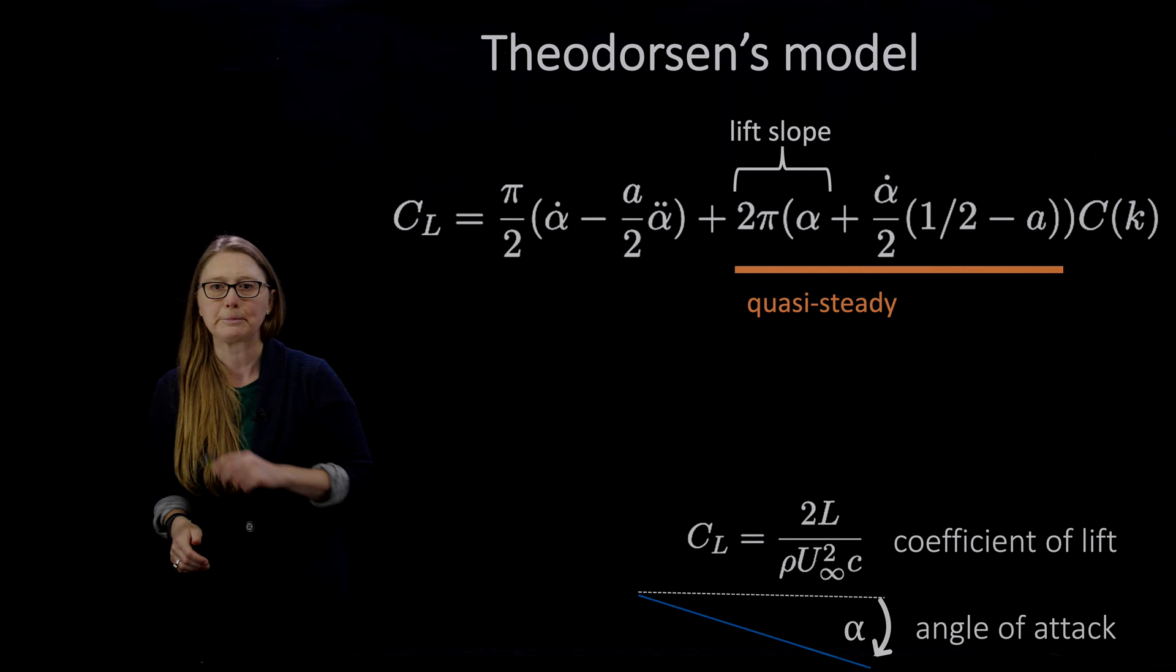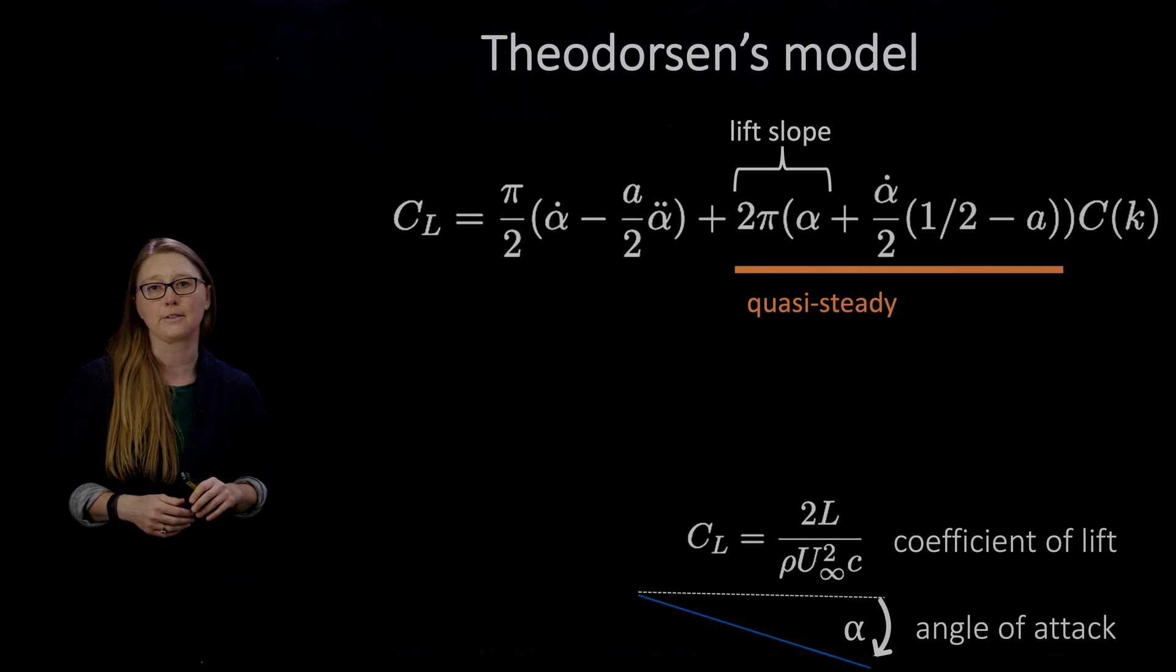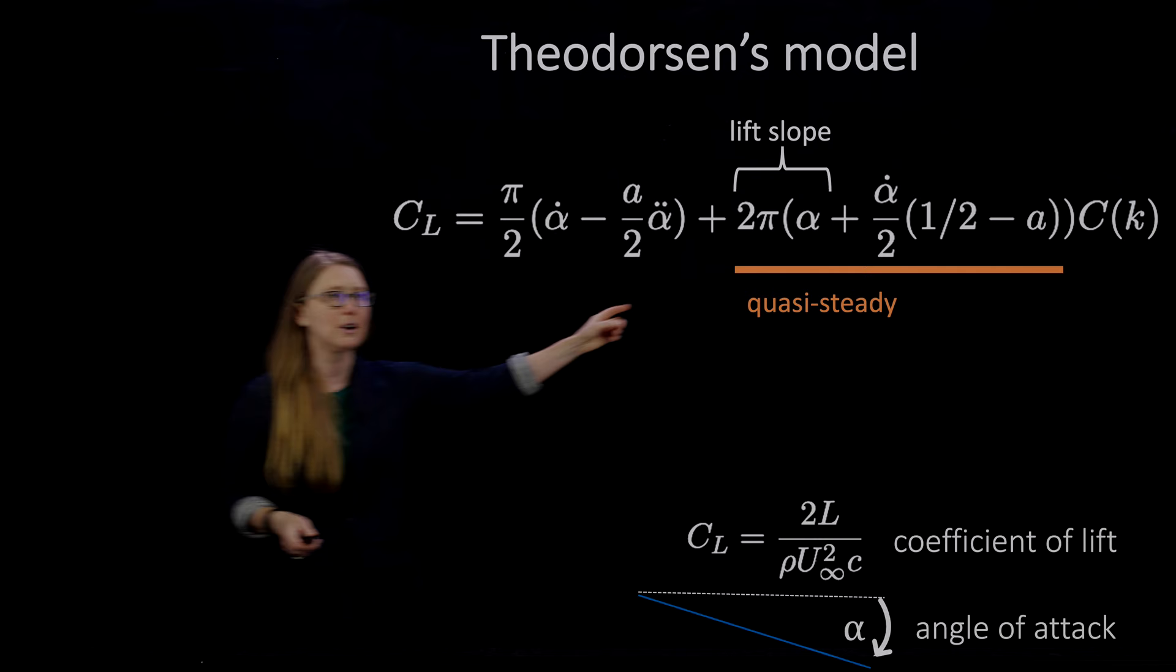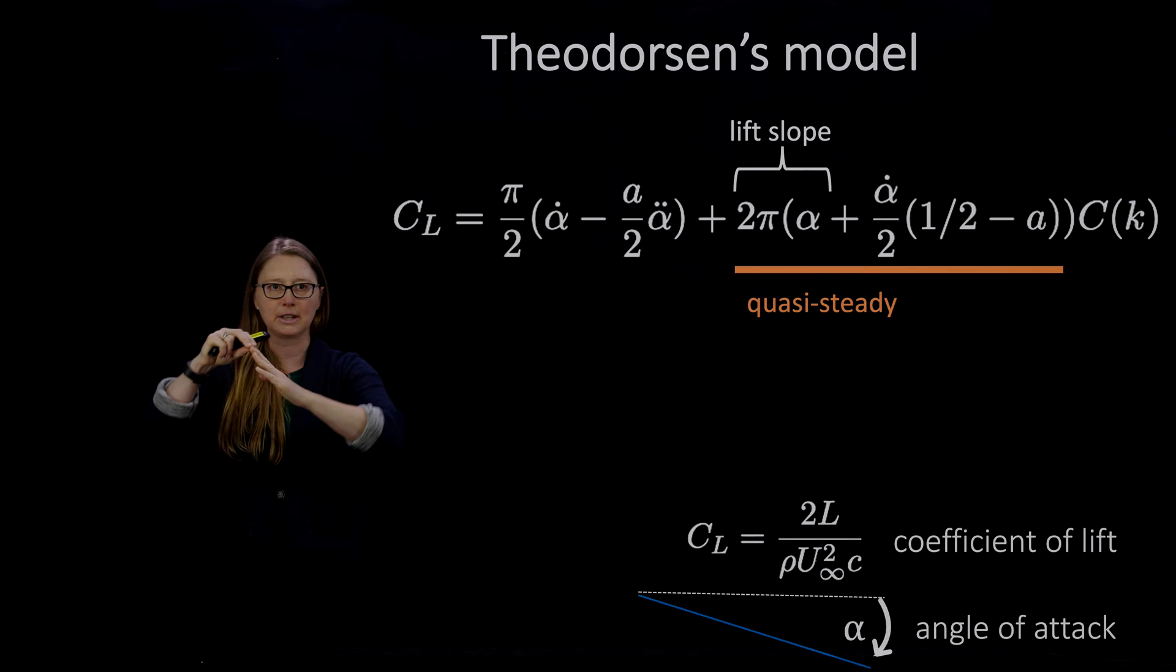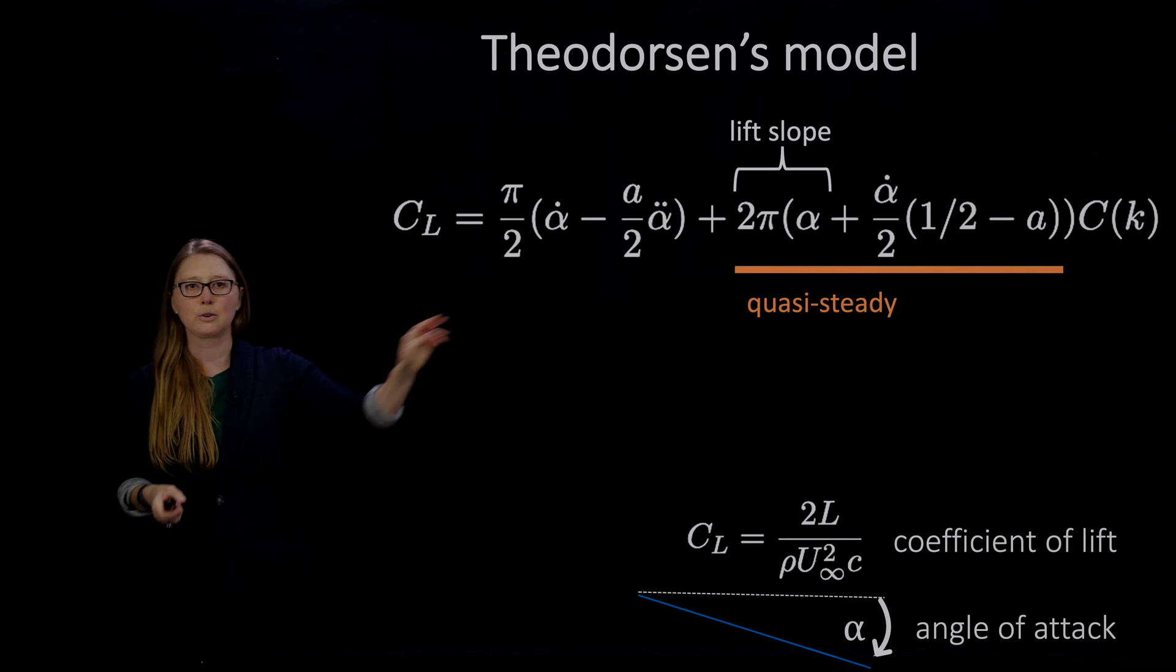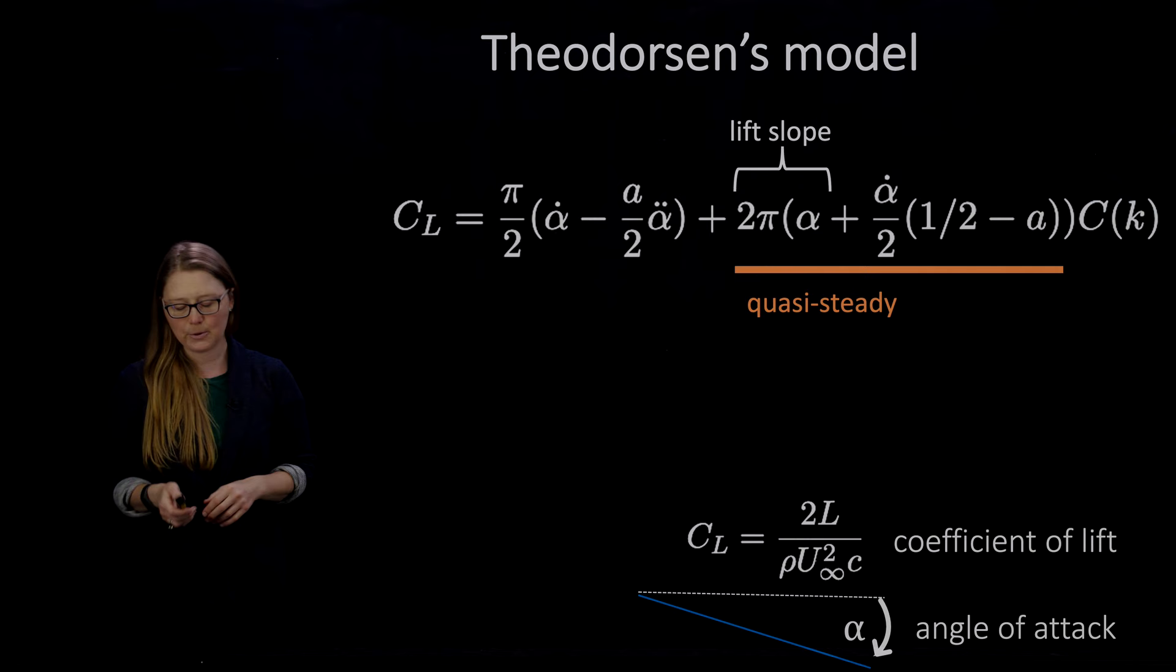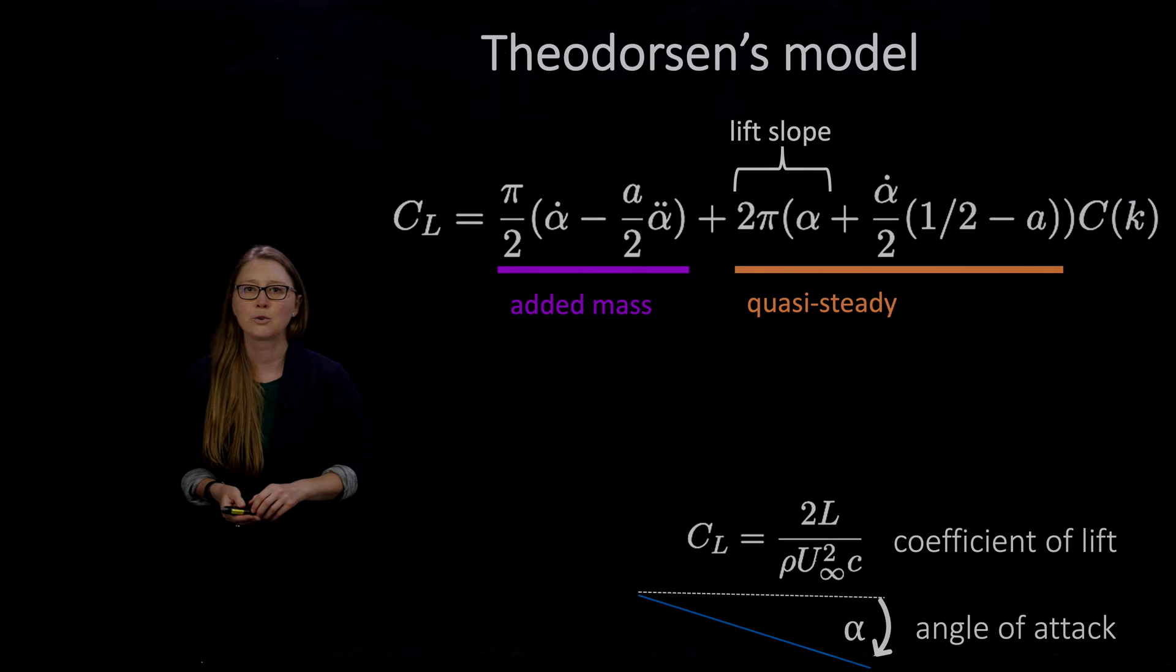So let's move on to Theodorsen's model. This is a model developed in the 1930s. It's again predicting coefficient of lift and we still have our nice little 2π lift slope. It's still in there. Now that slope is being adjusted for the pitch point. That's what A is in this equation. Are you pitching from the leading edge? Are you pitching from the quarter chord? And that term associated with the 2π lift slope is still the quasi-steady term. But now we get some extra terms. Now we get some added mass terms.